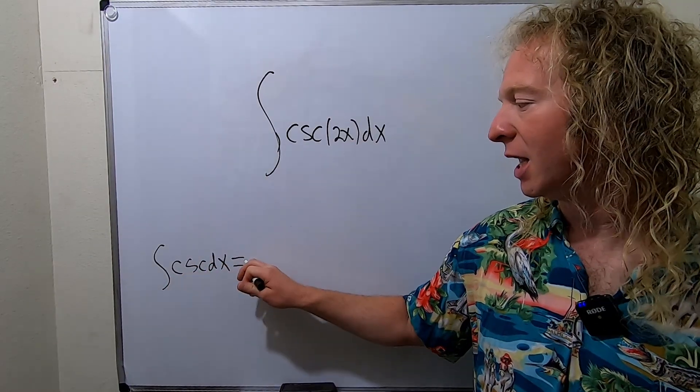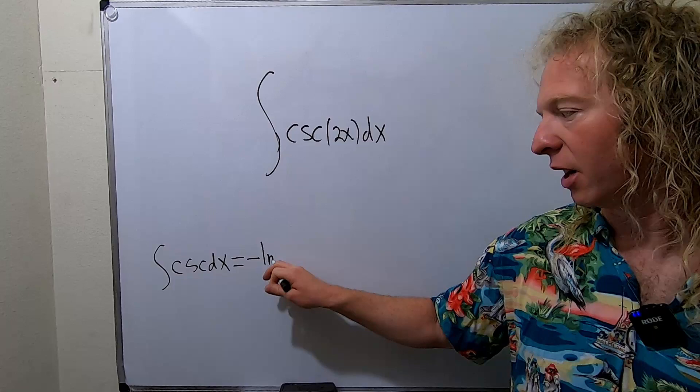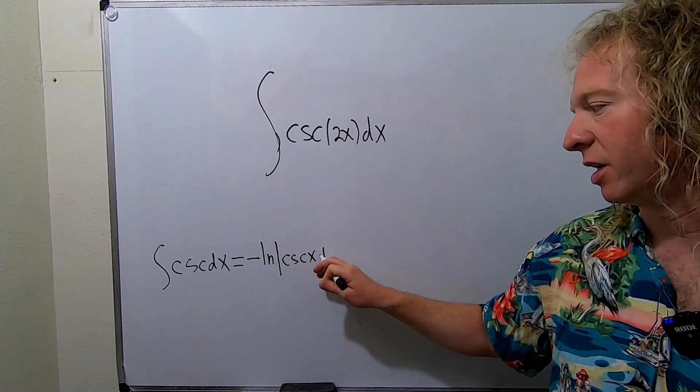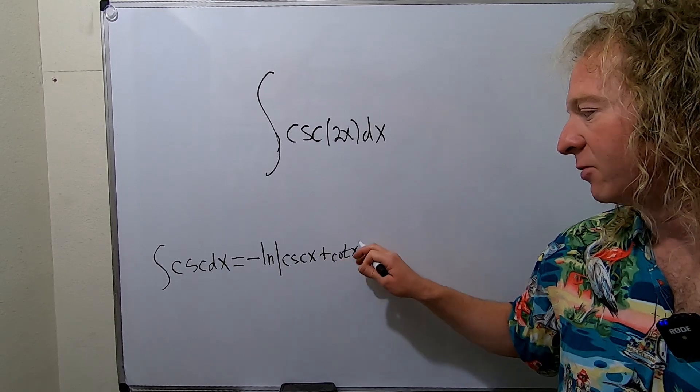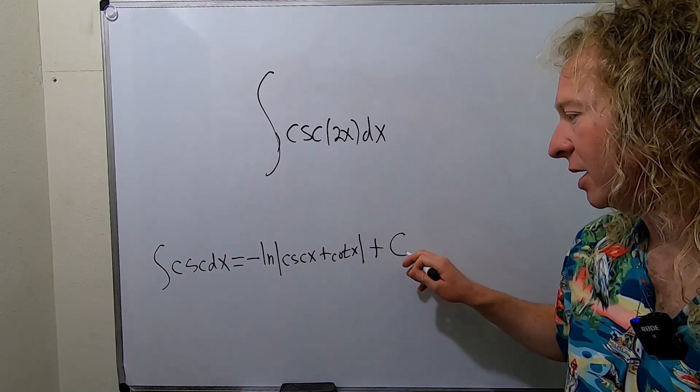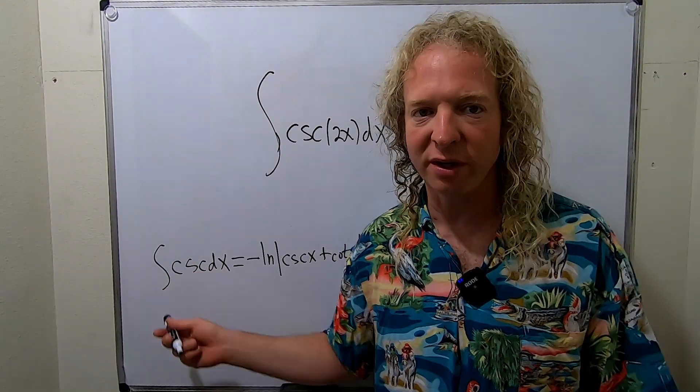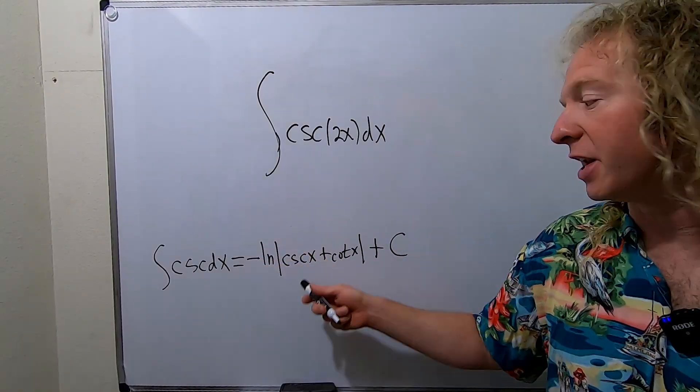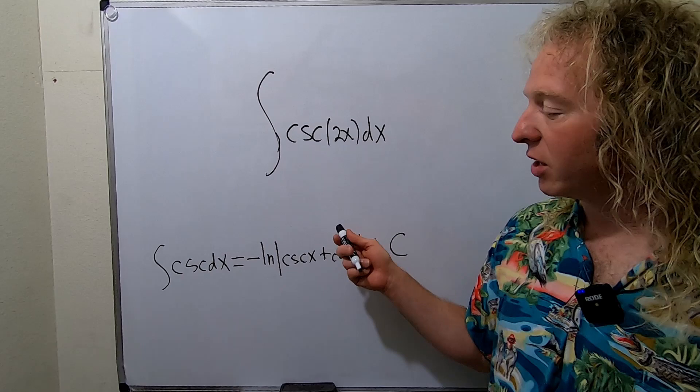...is equal to negative natural log absolute value cosecant x plus cotangent x. And we have an absolute value and we have a plus and a C. So it's very similar to the one for secant. Secant is the same except it's positive and it's secant plus tangent.